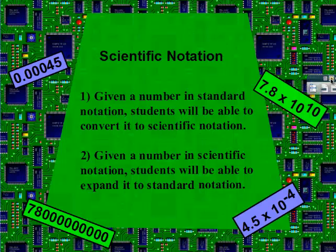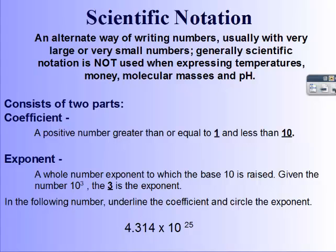Today we're going to talk about scientific notation. We use scientific notation when we have a number that's very large or very small, so we don't have to add so many zeros and to make it more accurate to rewrite the number multiple times. Scientific notation is an alternate way of writing numbers, usually when they're very large or very small. We do not use scientific notation when we're expressing temperature, money, molar mass, or pH.